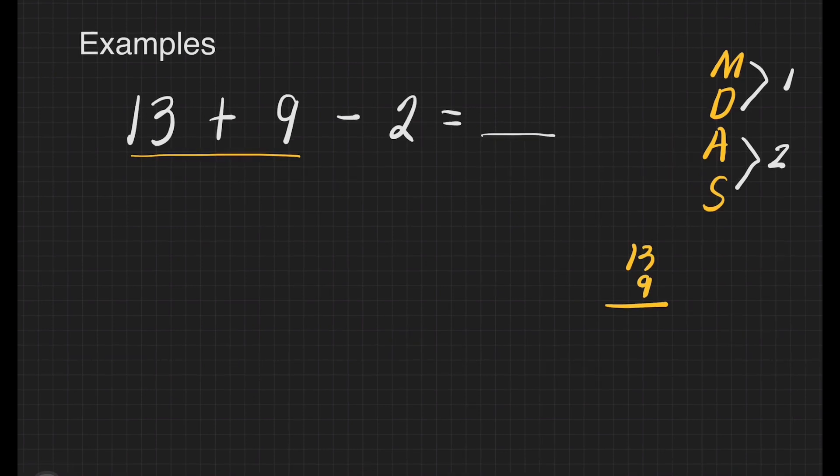3 plus 9 equals 12. Write 2 here, carry 1 to the top. 1 plus 1 equals 2, so we write 22 here. Then copy minus 2. Now we can subtract: 22 minus 2 equals 20. So our final answer is 20.